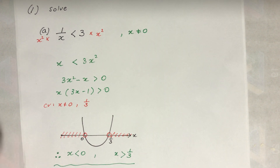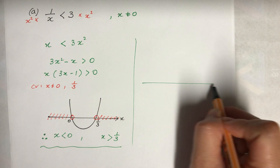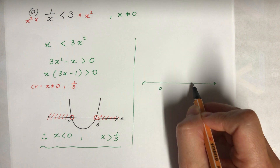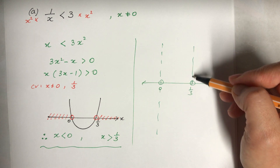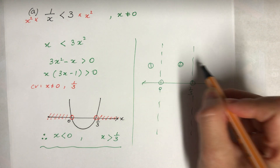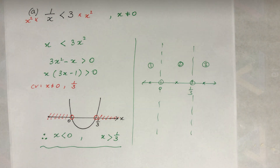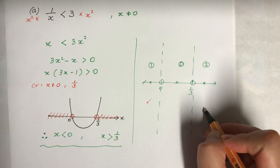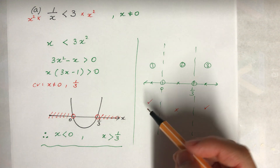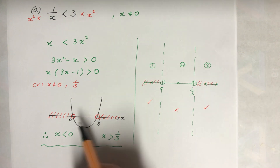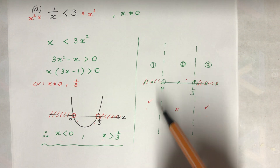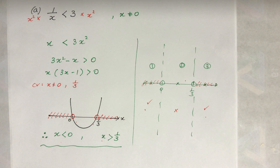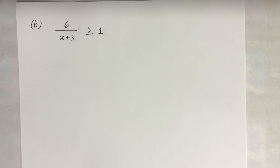To briefly show the number line method: we mark 0 and 1/3 as open circles, divide into three regions (area 1, area 2, area 3), and test a point in each region. The satisfying regions match the parabola result. For more detail on this method, refer to the quadratic inequalities video.